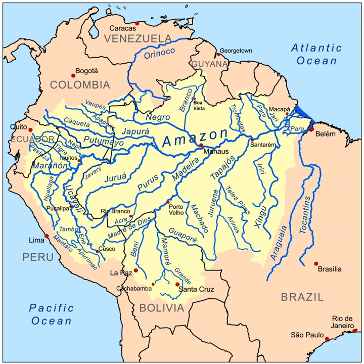It is located in the countries of Bolivia, Brazil, Colombia, Ecuador, Guyana, Peru, Suriname, and Venezuela. Most of the basin is covered by the Amazon Rainforest, also known as Amazonia. With a 5,500,000 square kilometer area of dense tropical forest, this is the largest rainforest in the world.